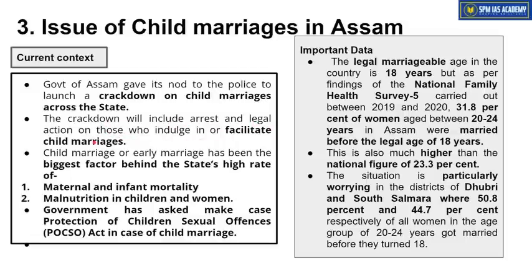In such cases, POCSO Act ke antargat case register karne ko kaha gaya hai — against those family members who are forcing children into marriages. Child marriage or early marriage has been a biggest factor behind the state's high rate of maternal and infant mortality. Jab young girls, khaskar 18 years se kam age ki girls ki shaadi kara di jaati hai aur then if they get pregnant, toh us case mein maternal ya infant mortality ke chances zyada ho jaate hain. Malnutrition ke bhi problems hote hain because of early marriages, when the girl's body is not ready to conceive.